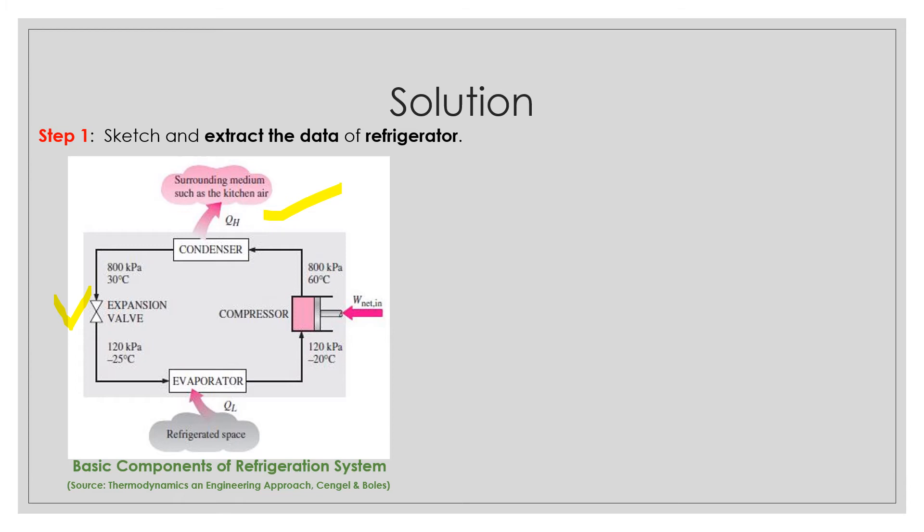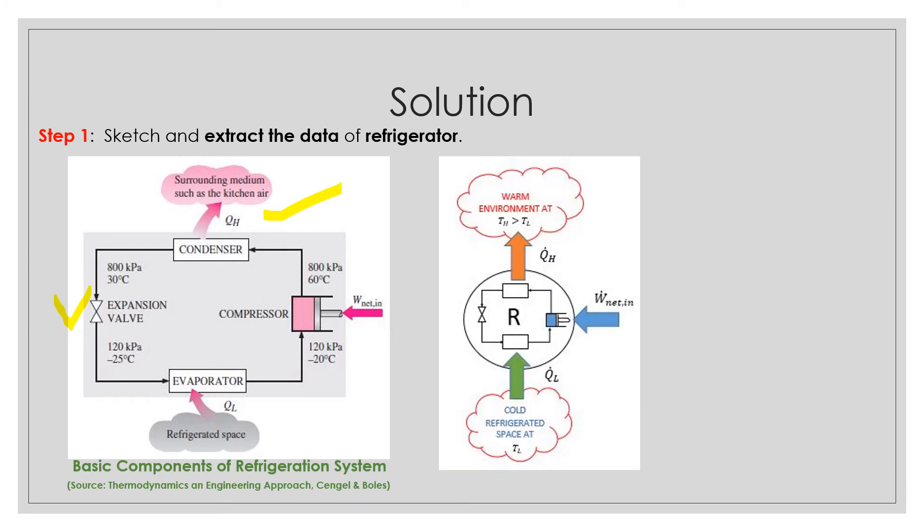We can simplify this diagram in this form. The warm environment, refrigeration, and cold refrigerated space. This one refers to this part, and the R circle refers to this refrigeration system, and the refrigerated space, cold refrigerated space at T_R.